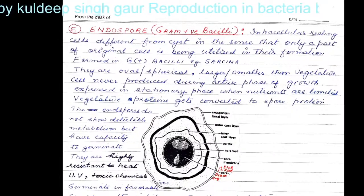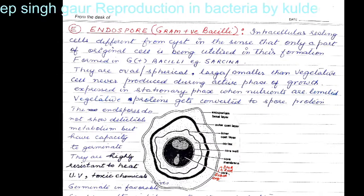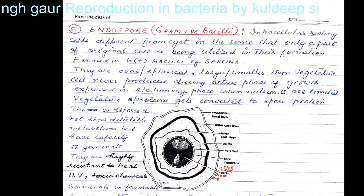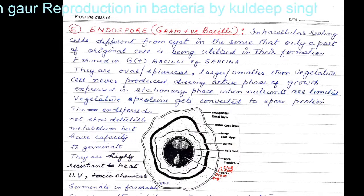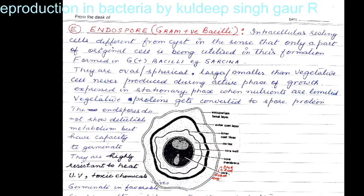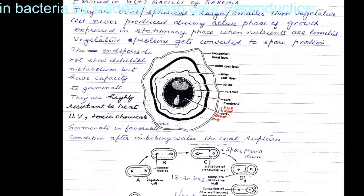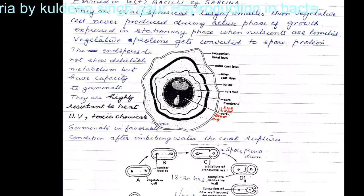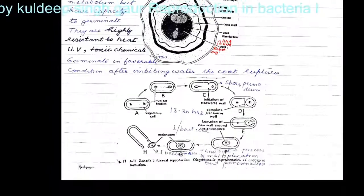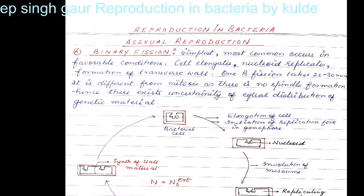The protein gets converted to spore proteins and the endospore does not show any detectable metabolism. But whenever favorable conditions come, the spore has the capacity to germinate. It is very resilient — highly resistant to heat, ultraviolet rays, and toxic chemicals. Whenever favorable conditions return, the spore wall imbibes water, the coats get ruptured, and the new bacterial cell comes into existence. These are the methods of asexual reproduction in bacteria.